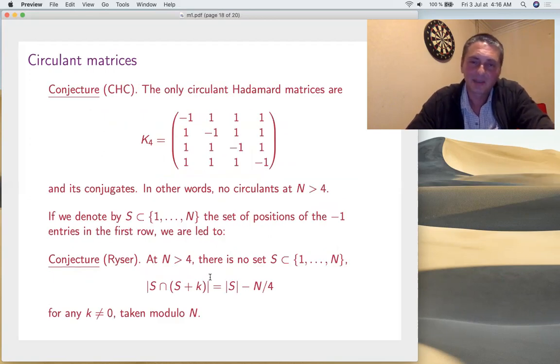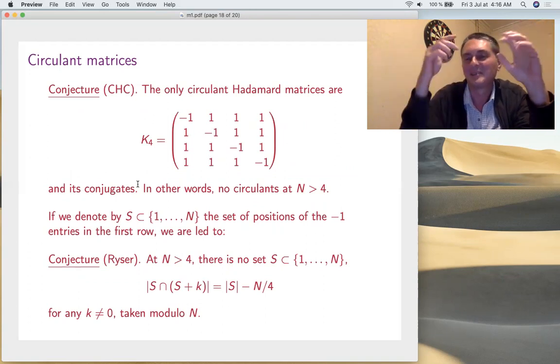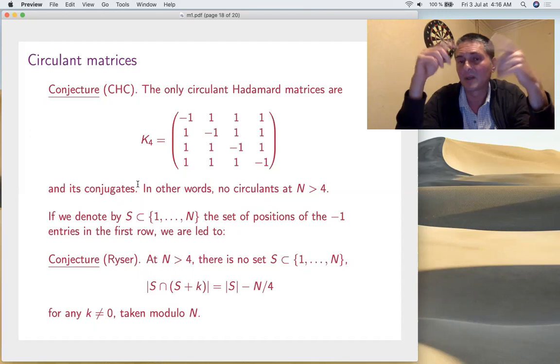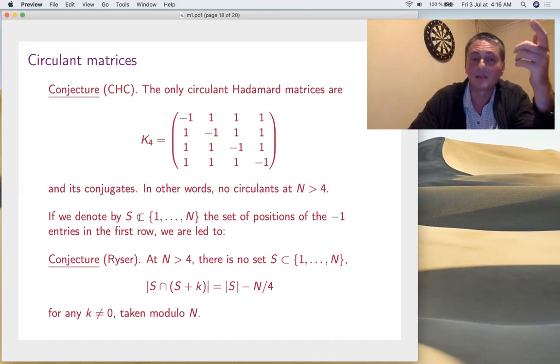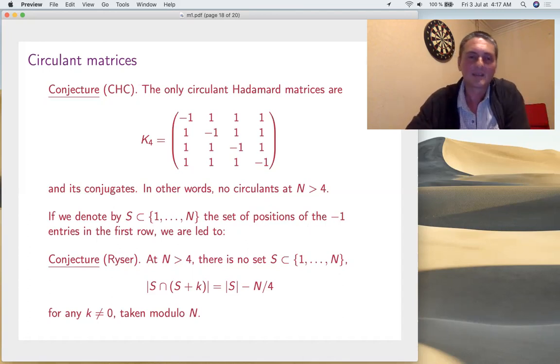One more thing - circulant matrices here, this K_4 matrix is obviously Hadamard and it's circulant. The conjecture is that this is the only one up to this equivalence - switching rows, columns. This is amazing because it depends only on the first row. A circulant matrix means to take a vector and then to rotate it, right? So it's a conjecture about a vector, and the vector is made of one and minus one. If you want, it's about a set. If you take the set of positions of minus ones, everything depends on that set. Hadamard means that when you translate the set, number of matchings must be number of mismatchings. That's your condition. The conjecture is Ryser, which is also very old from the fifties I think - there is no set satisfying this condition for N greater than 4. Just amazing. This is open for a long time. Very difficult questions.